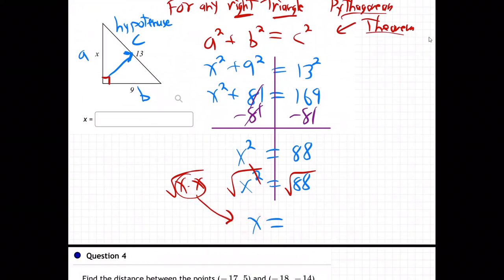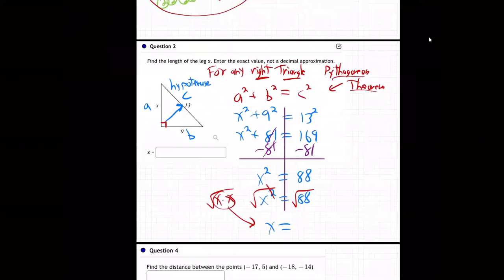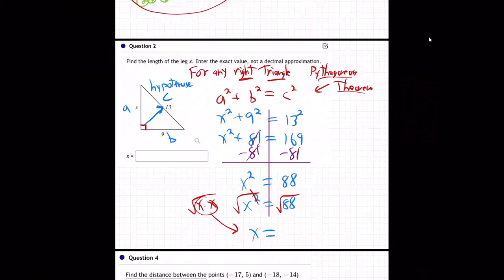Okay, now what about the other side, square root of 88? Well, notice that they don't want a decimal, see up here they say, your attention up here says not a decimal, exactly, so we got to simplify that square root of 88.